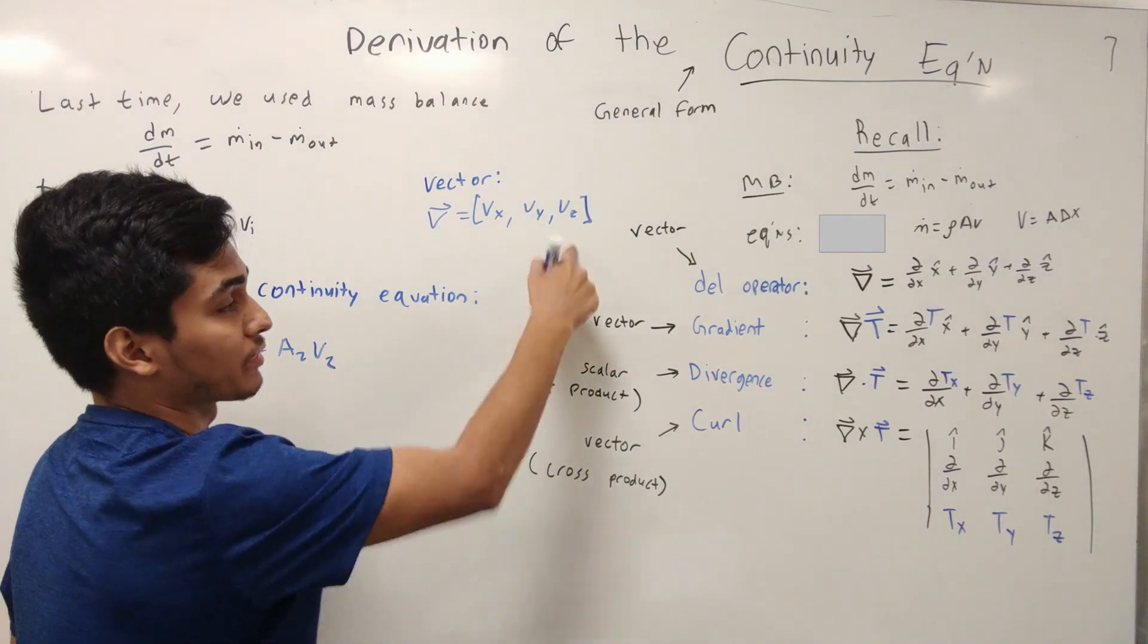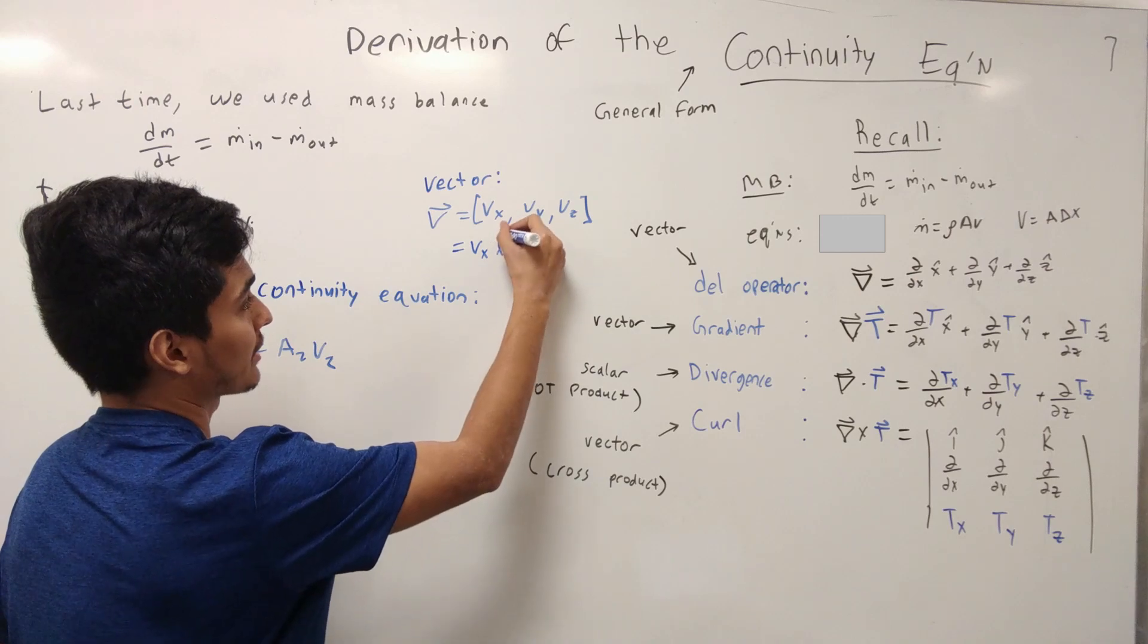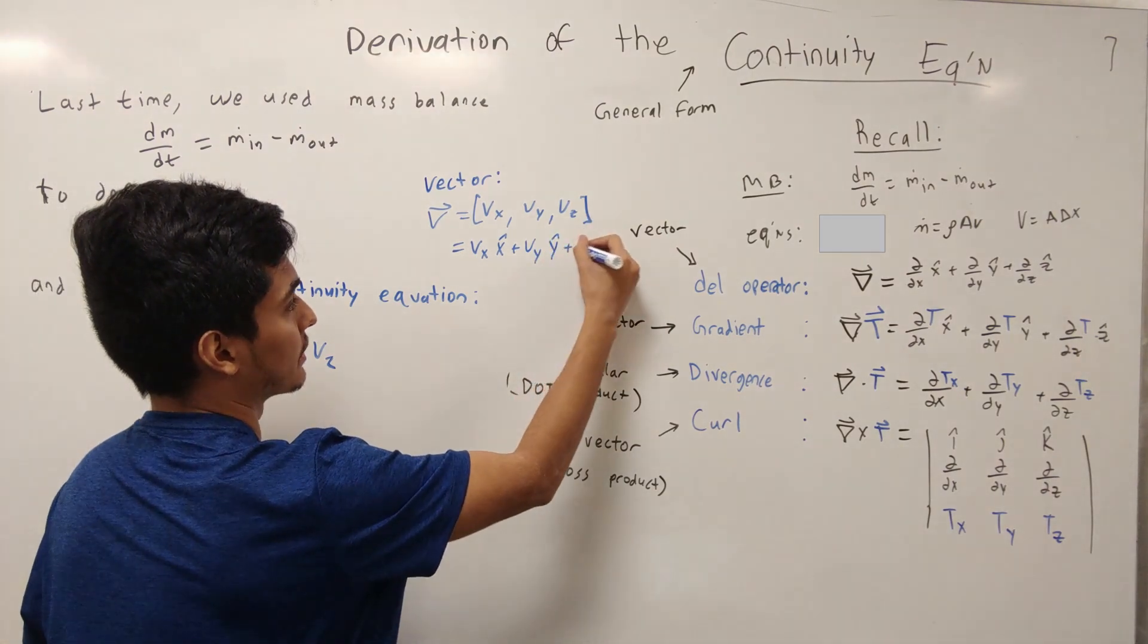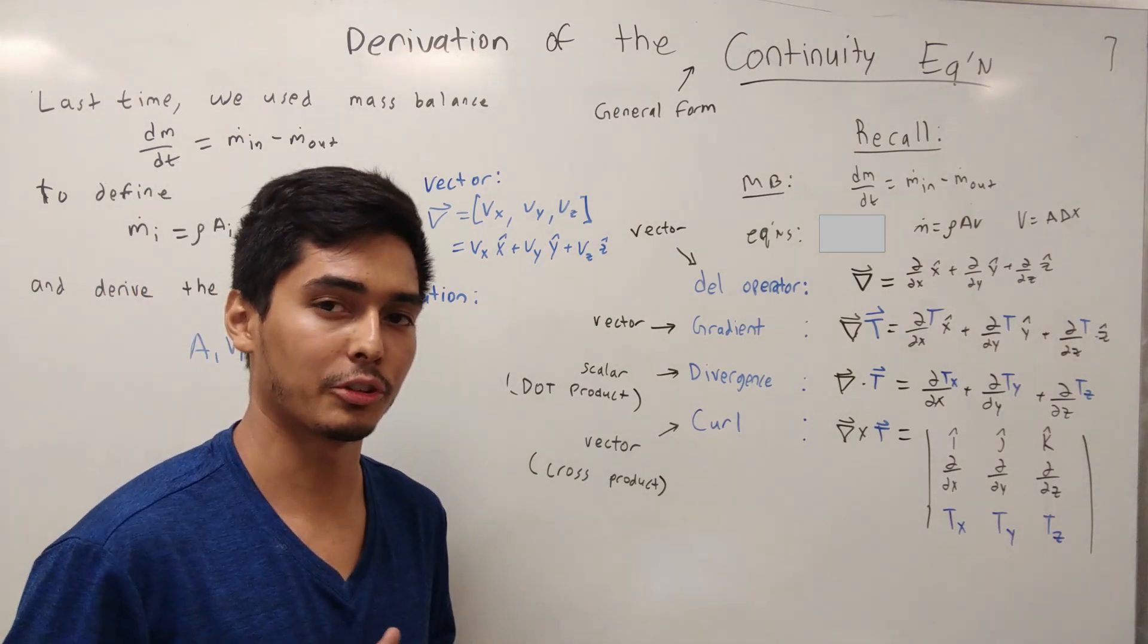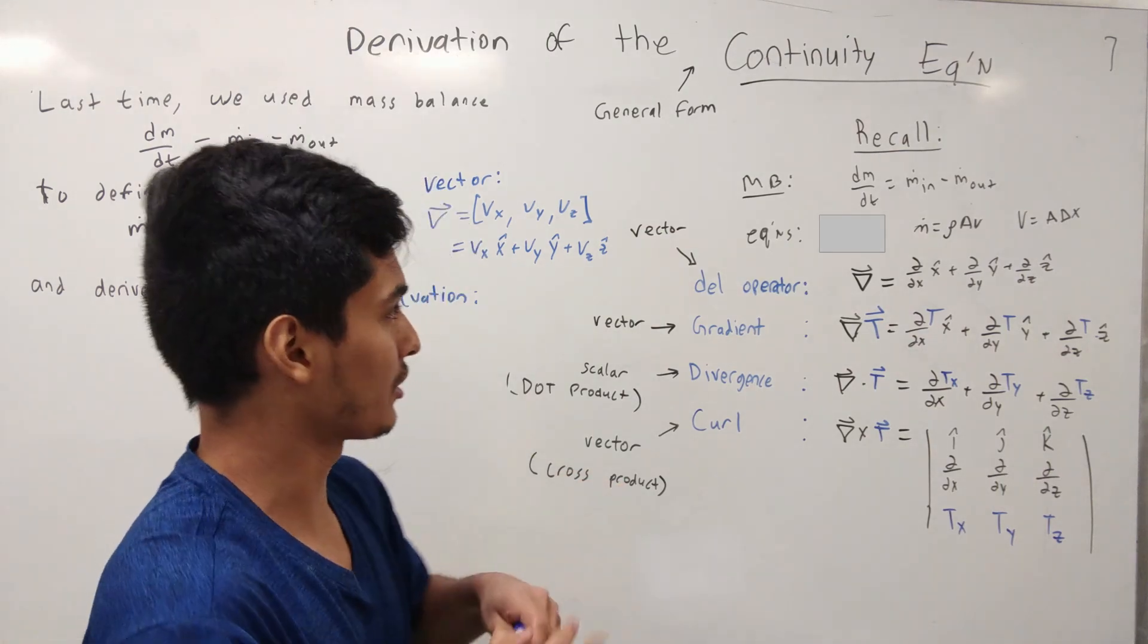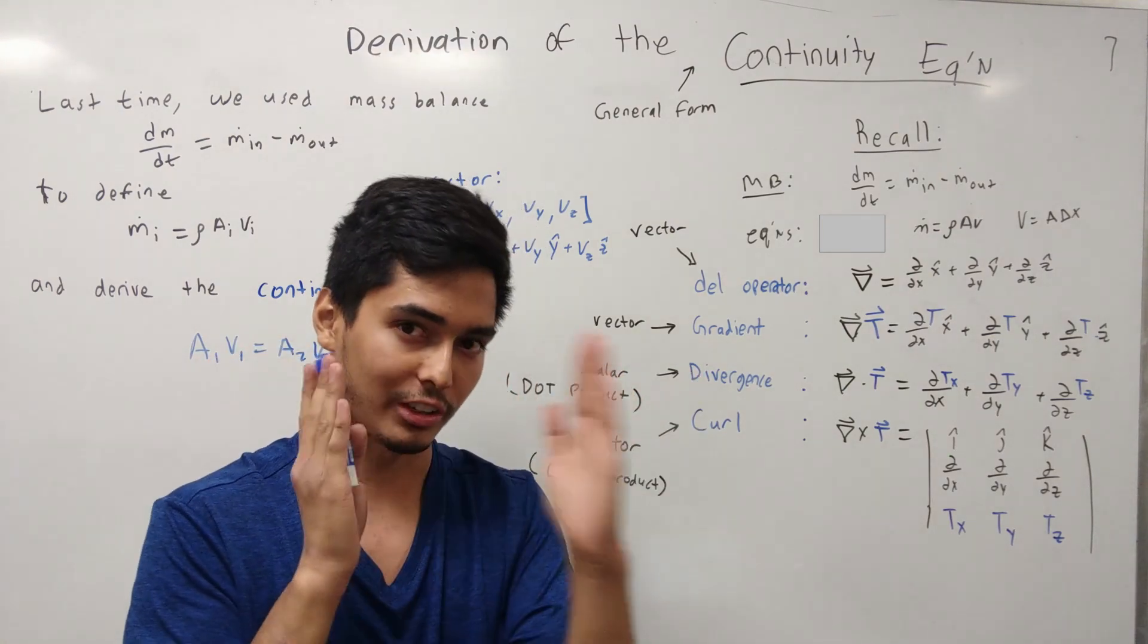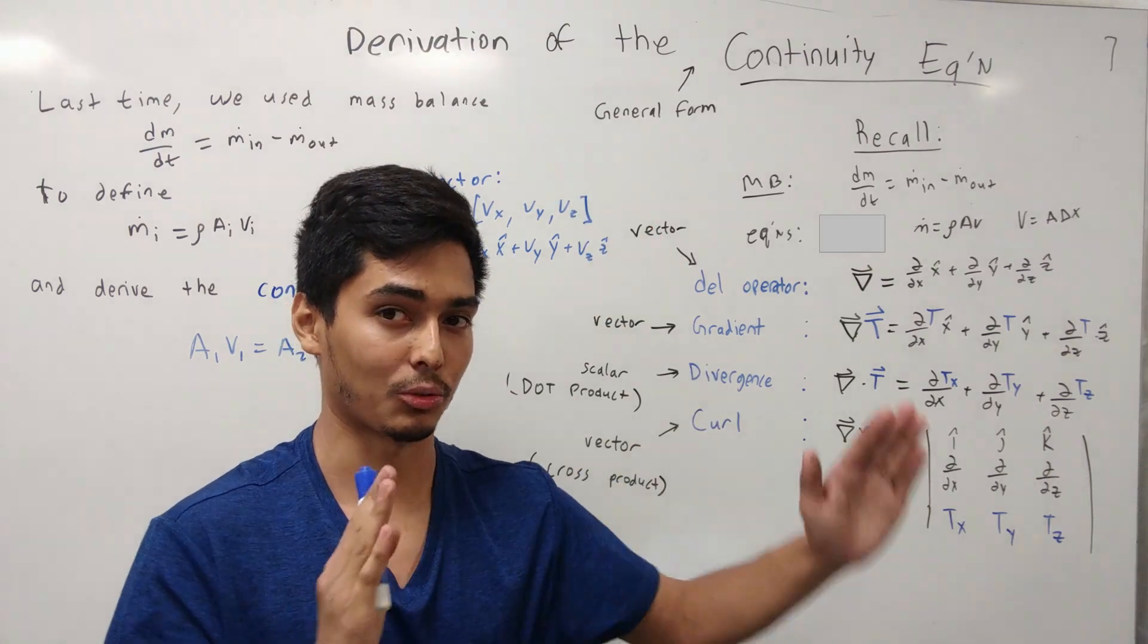And so, you can write it using vector notation, which can also be written as this, where you write the x component with an x hat, and you write the addition, and the y component with a y hat, addition, z component with a z hat. You'll notice that a lot of the times, you're writing the same thing three times, you're just changing from x, y, and z. And essentially, what that's doing is we're going from one dimension to three dimensions. So, one dimension is just x, two dimensions is x and y, and three dimensions is x, y, and z.